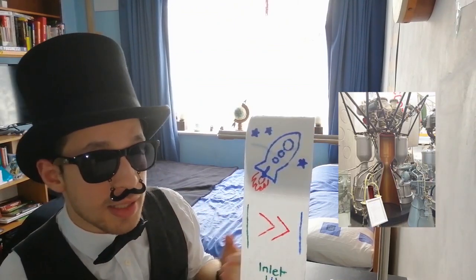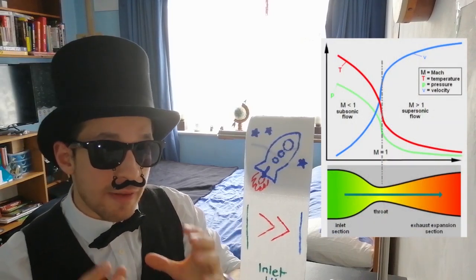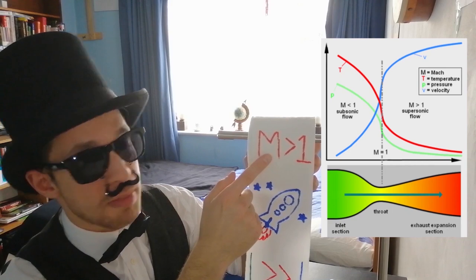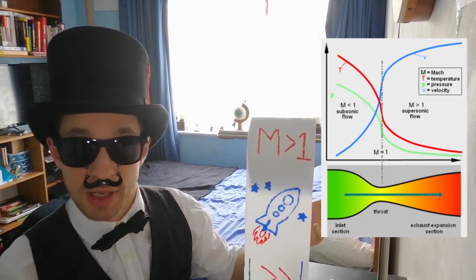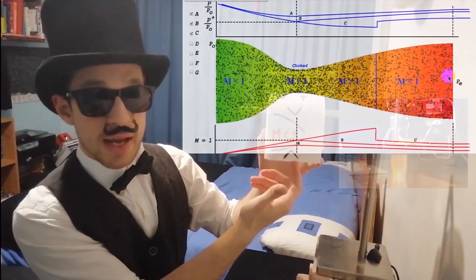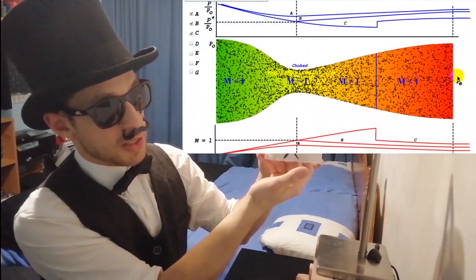Research quickly brought us to the Delaval nozzle, commonly used in rockets and steam turbines. It utilizes a very specific geometry which allows the fluids passing through it to reach a speed with a Mach number greater than 1, aka supersonic flow in the axial direction. It does this by converting the heat energy at inlet to kinetic energy.